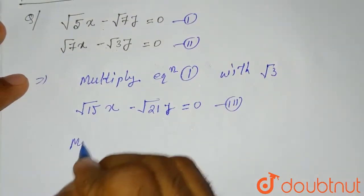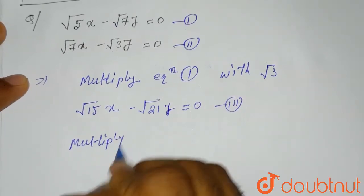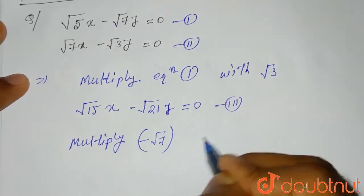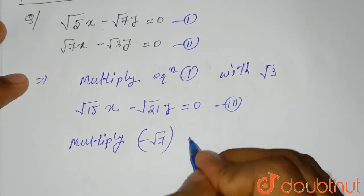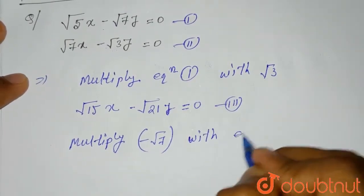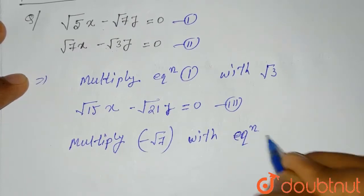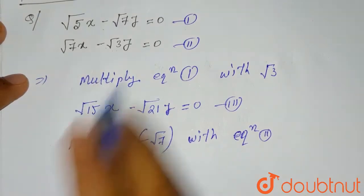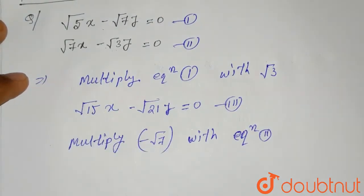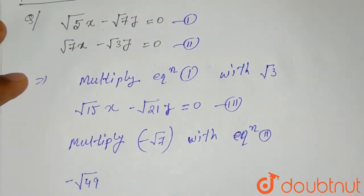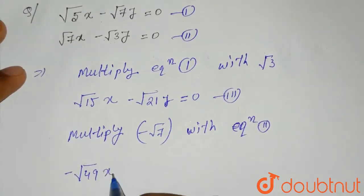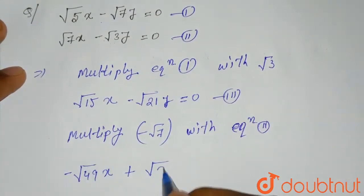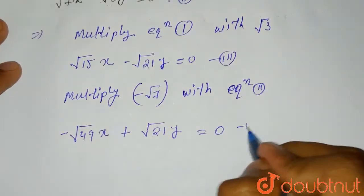For the second equation, we will multiply with minus root 7. Minus root 7 into equation 2. That means it will be minus root 7 into 7, which is minus root 49 X. It will be plus root 21 Y equals to 0. This is the fourth equation.